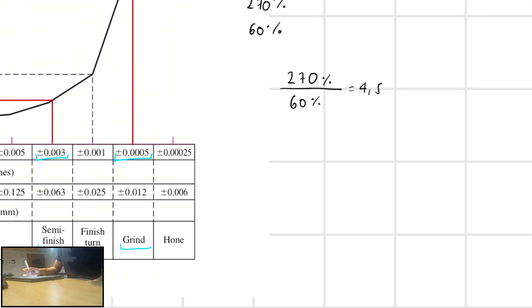By multiplying 4.5 times 60, we'll have a percentage of 270.